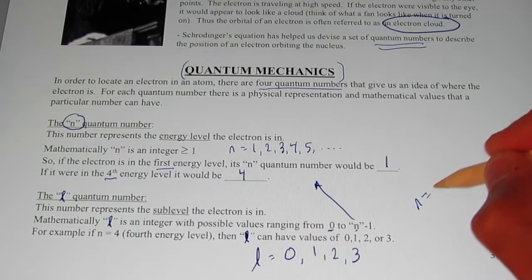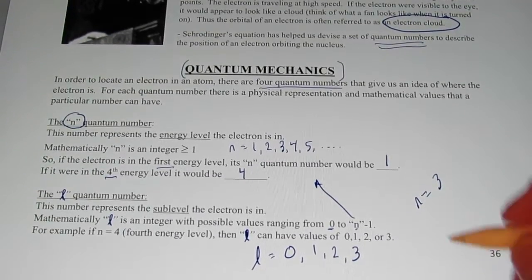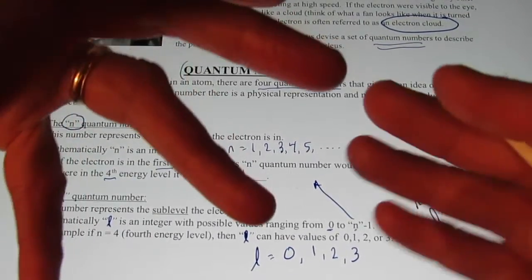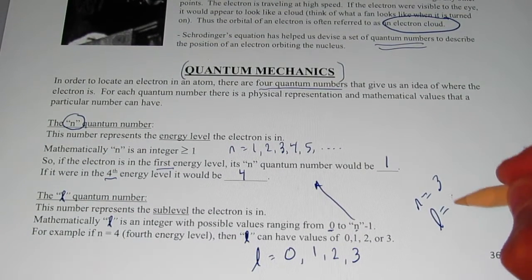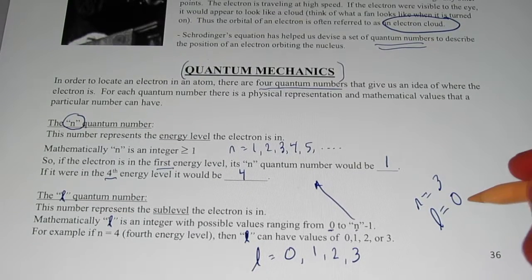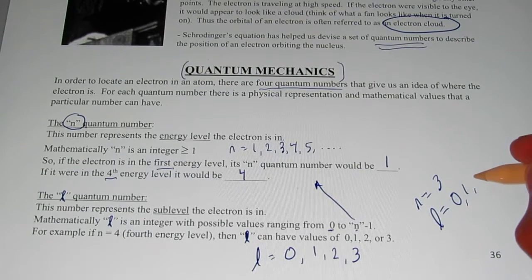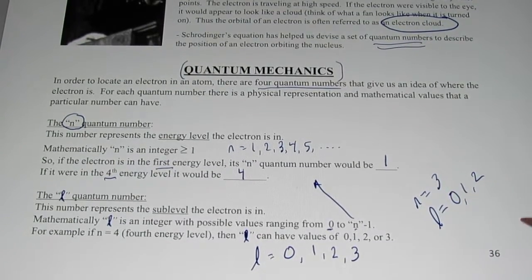Let's say n equals three. What do you think the possible L values were? What are the possible sublevels when L is equal to three? If you said zero, nice start. One and two. Because n minus one is two.